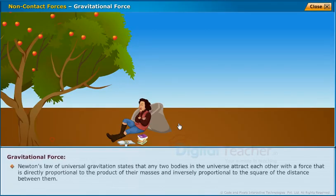Newton's law of universal gravitation states that any two bodies in the universe attract each other with a force that is directly proportional to the product of their masses and inversely proportional to the square of the distance between them.